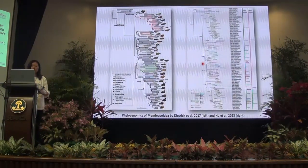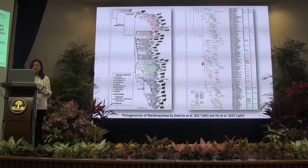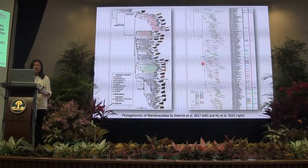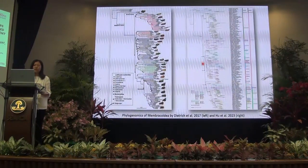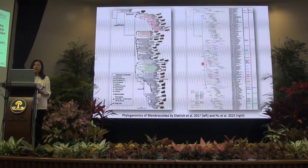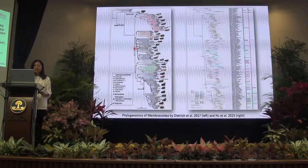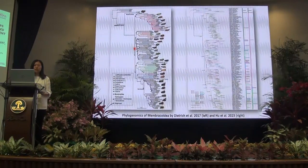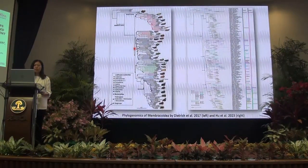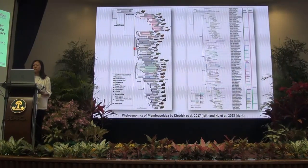Here are two of the most comprehensive studies of the phylogenomics of Membracoidea. On the left, you can see the result from Dietrich et al. 2017. To some extent, this study resolved the relationships among some subfamilies. However, there are some very short internal branches with low branch support. On the right is a study from Hu et al. 2023. They used transcriptome data to reconstruct the phylogeny. As in Dietrich's study, the branch support for deeper levels of phylogeny are usually very low, and the relationships are unstable among different analysis methods.